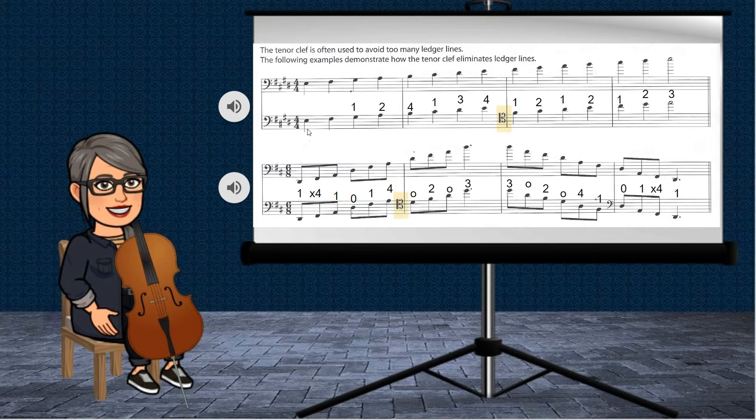Now, it starts on E on the D string, and then it will transition into the A string for the C sharp, and then you'll transition into tenor clef for this F sharp right here. Let me go ahead and play this example for you.